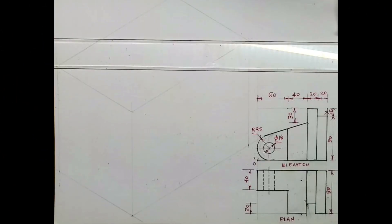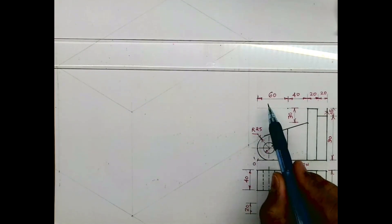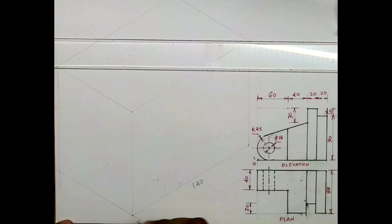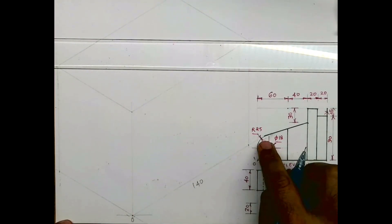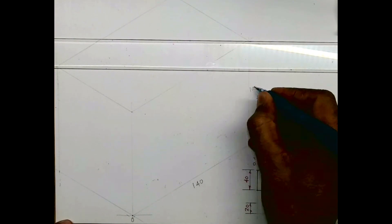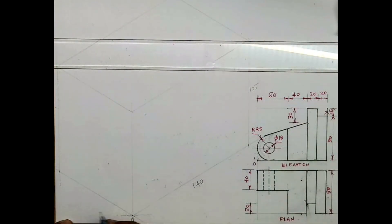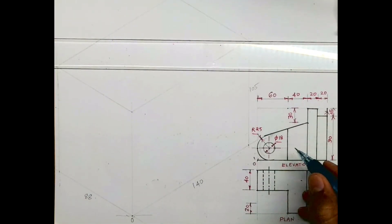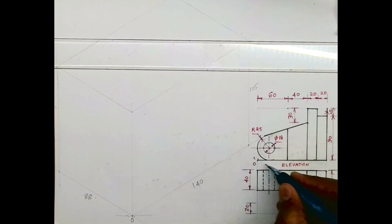Welcome to technical drawing. Today we'll see this sum in isometric. Two views are given: elevation and plan. The length is 100 plus 40, so 140. The height is 90 plus 15, so 105. And the width is 88.